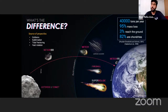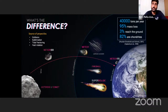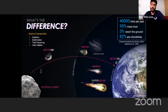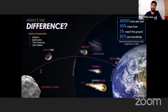If a meteoroid survives the ablation process and reaches the Earth's surface, it becomes a meteorite. To give some data: 40,000 tons per year of new material arrive at Earth, but only 3% of this material reaches the ground, and 95% of the mass is lost in the ablation process.